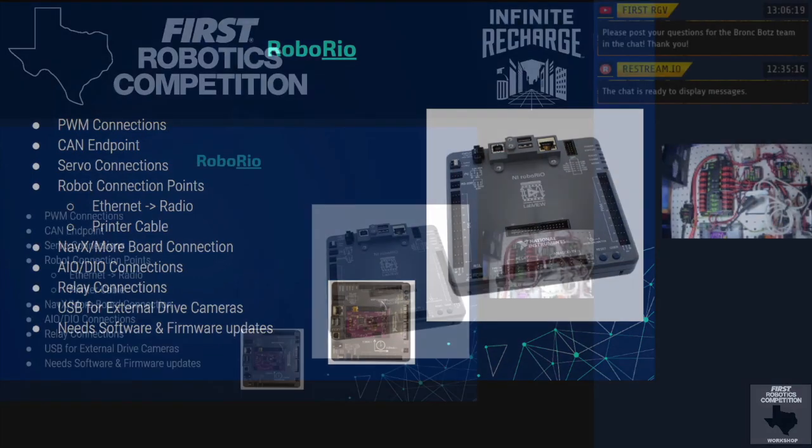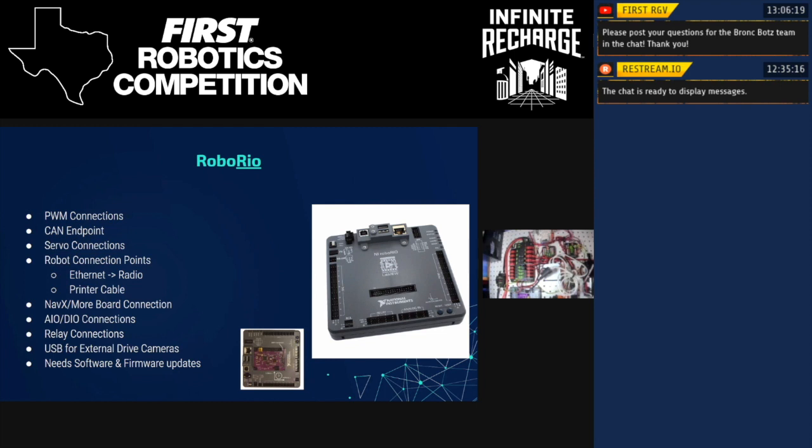So next thing that we have to talk about, and this is one of the really, really big ones as far as importance goes, is the Robo Rio. The Robo Rio is the brain of your robot. It's an industrial robot controller made by National Instruments, although I think they just rebranded it as NI. And it has all of the data and logical connections on your robot, or most of them at least. So it's responsible for sending your power, for telling your motors what to do, inputting your sensors, all of that. So you've got PWM connections, which are those three wire data connections that Riley showed you earlier with the black, red and white. It's a CAN endpoint. So it's the other end of the chain from the PDP. It starts at the Rio and ends at the PDP. It's got your servo connections, any robot connection points. So your Ethernet to your radio, which is how you communicate with your laptop or your driver's station. That is all through the Robo Rio.